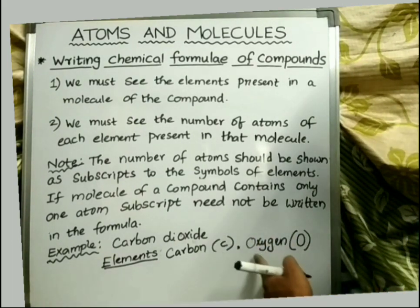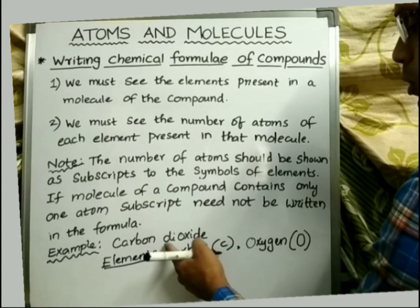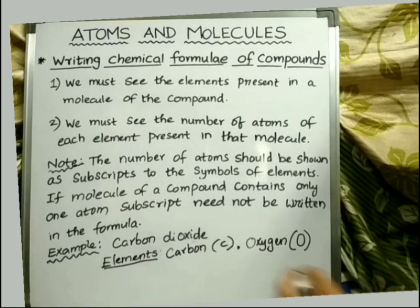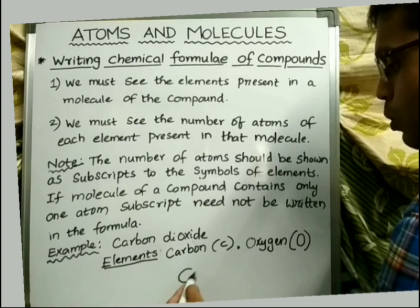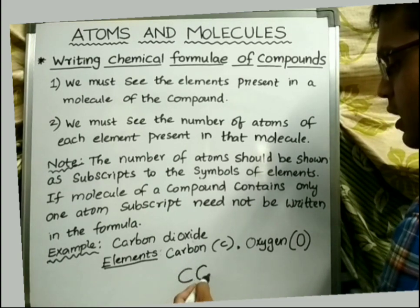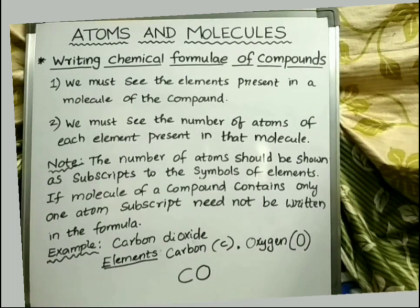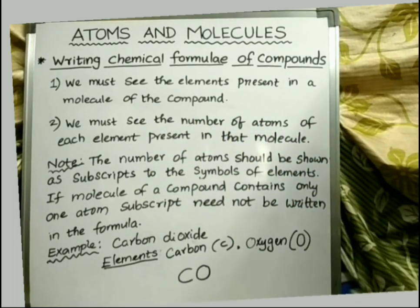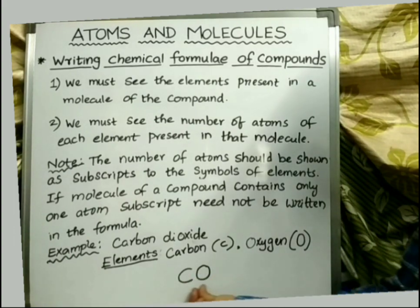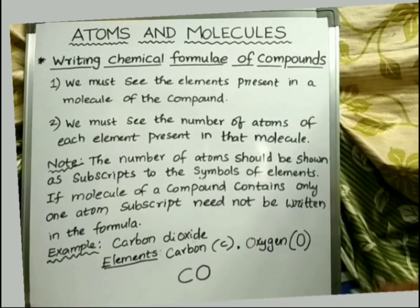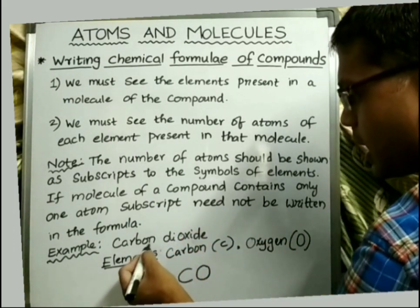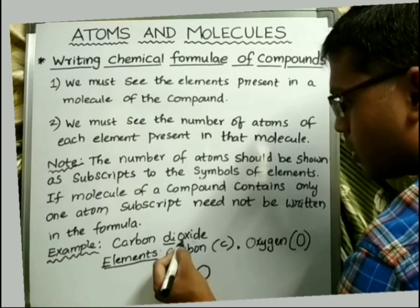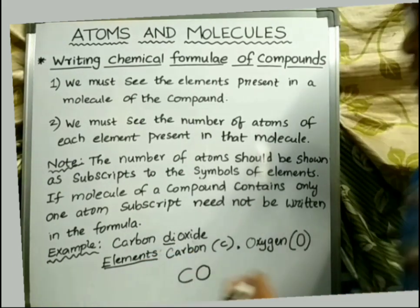After identifying the elements present in the molecule of the compound, we have to write both symbols of the elements together. Now we will apply the second rule: the number of atoms of each element should be shown as subscripts to the symbols. In carbon dioxide, only one carbon atom is present, but two oxygen atoms are present.